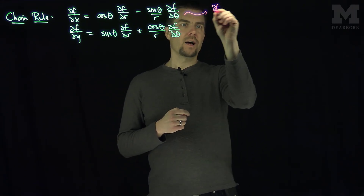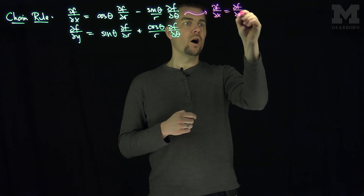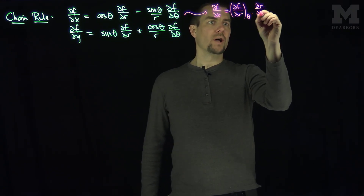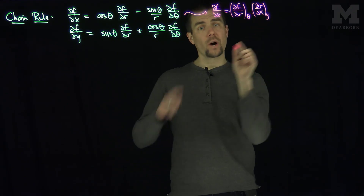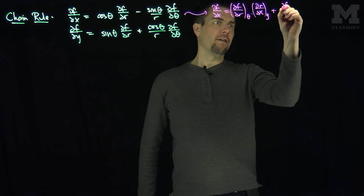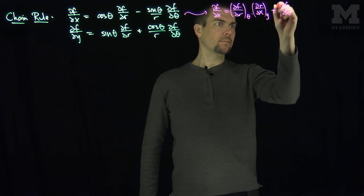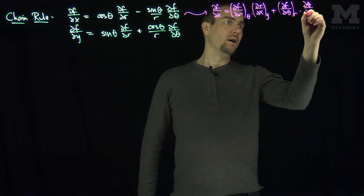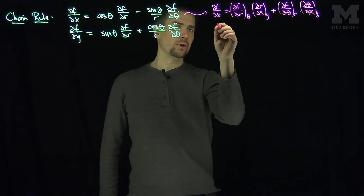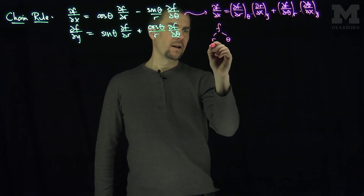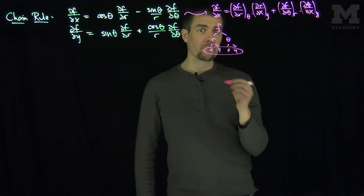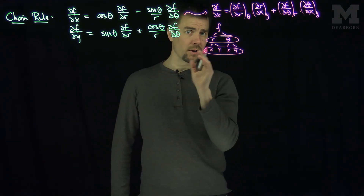The chain rule says ∂f/∂x = (∂f/∂r)(∂r/∂x) + (∂f/∂θ)(∂θ/∂x), where we treat θ as constant when doing r-derivatives, and treat y as constant when doing x-derivatives. This uses the tree structure where f is a function of r and θ, and r and θ are functions of x and y.